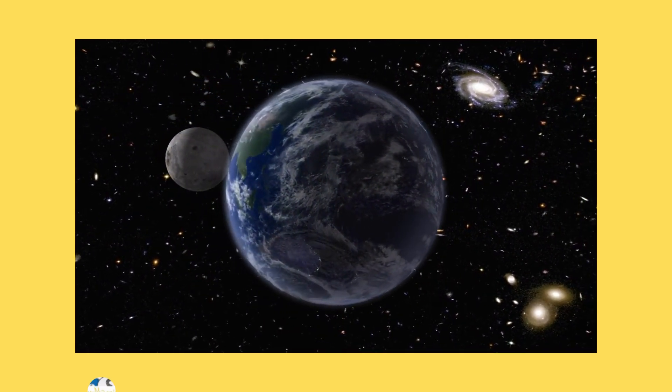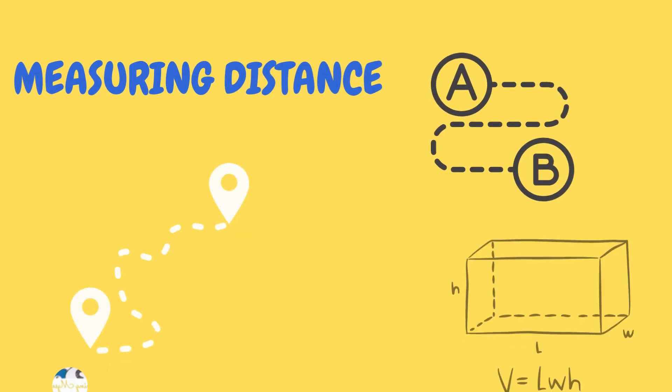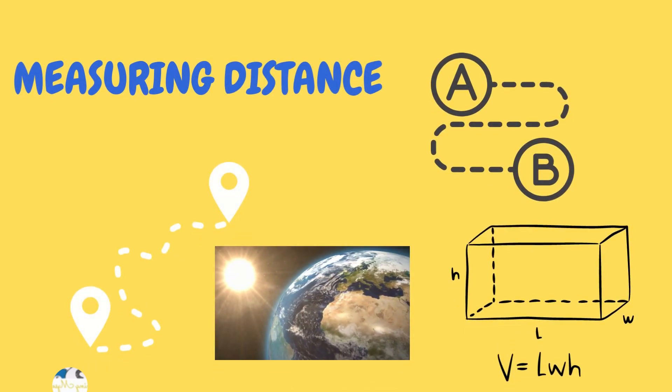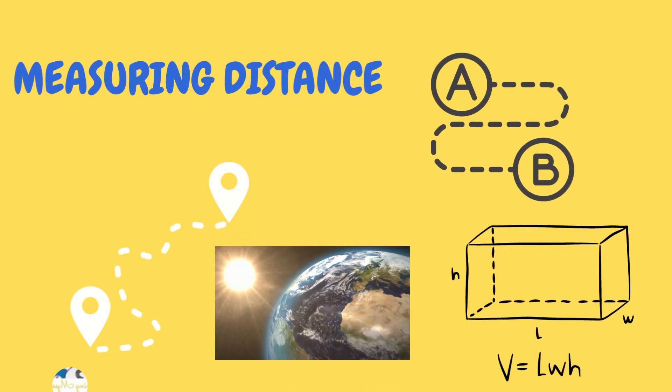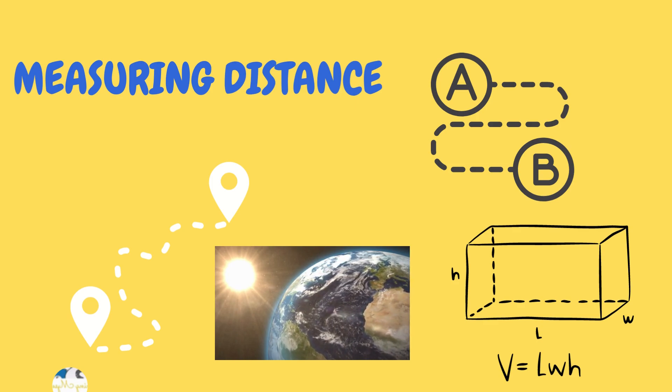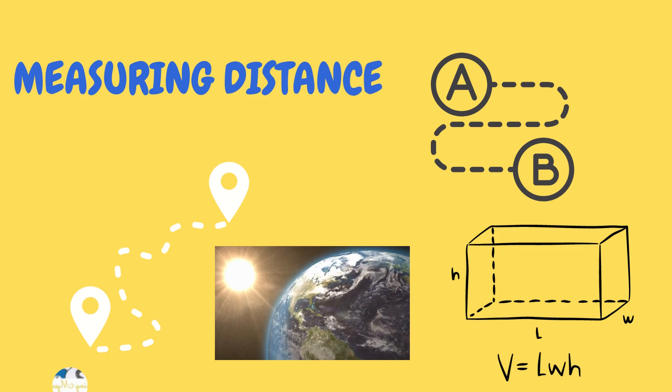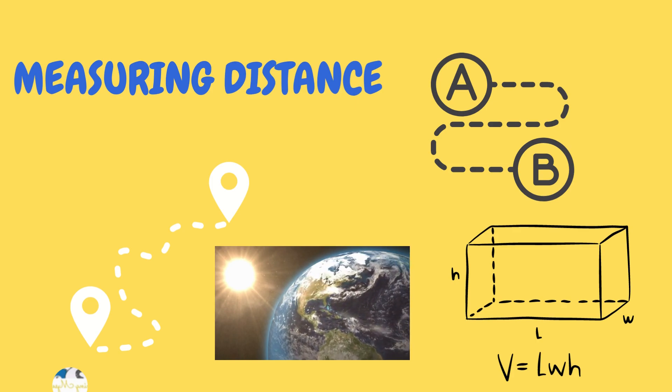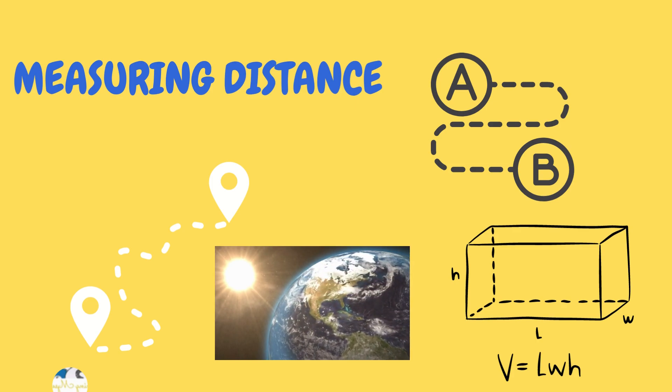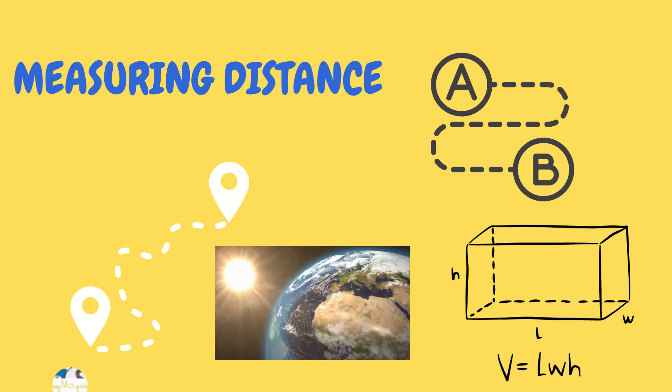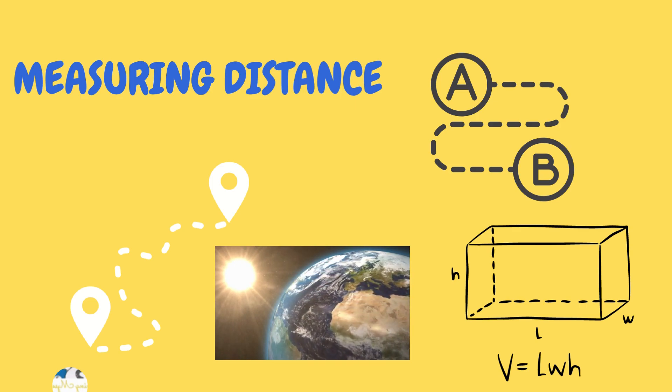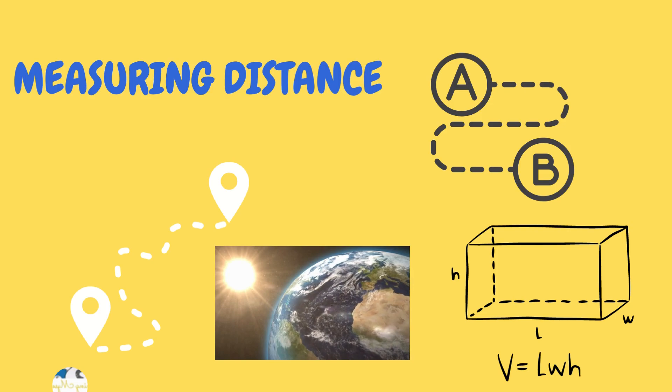So what does this have to do with geometry? When things move, you can measure how far they've moved from point A to point B. You can find the distance between point A and point B. In geometry, you can find the length, the width, or the height between two points on any object.